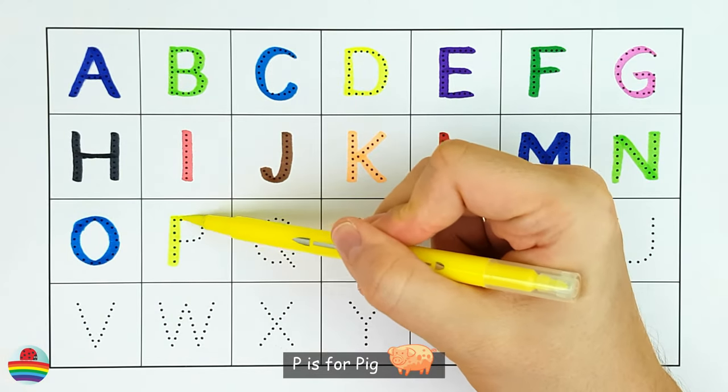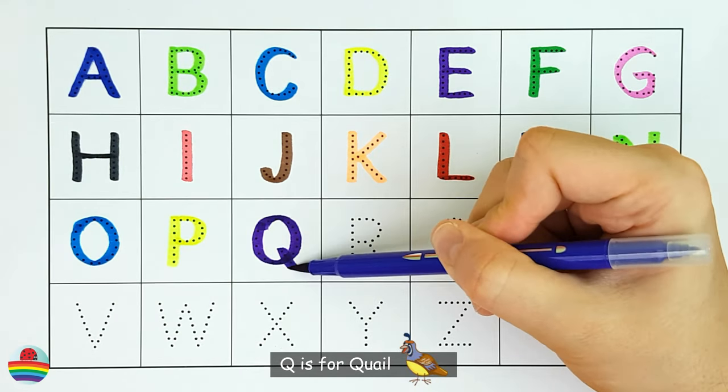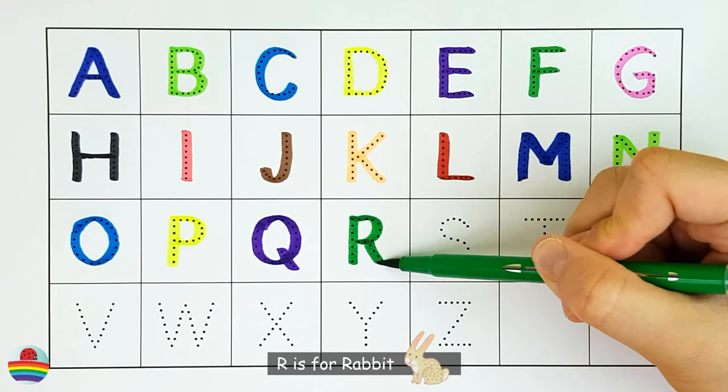P. P is for pig. P. Q. Q is for quail. Q. R. R is for rabbit. R.